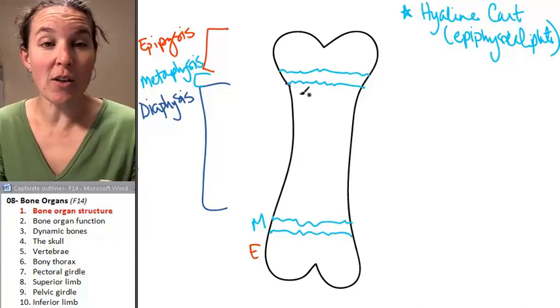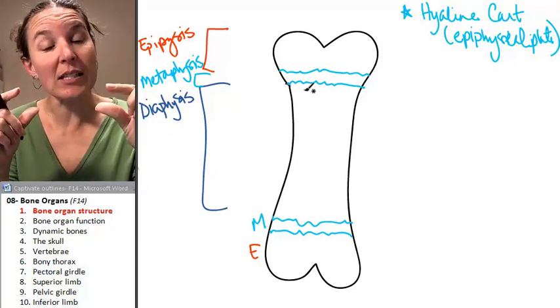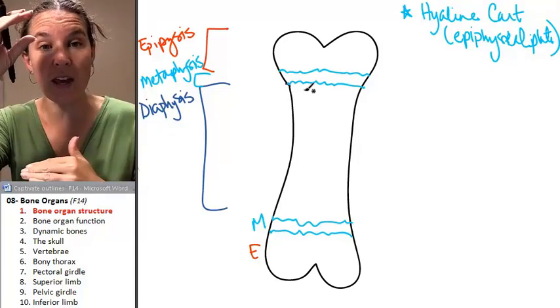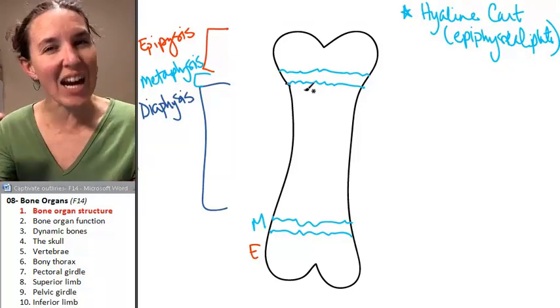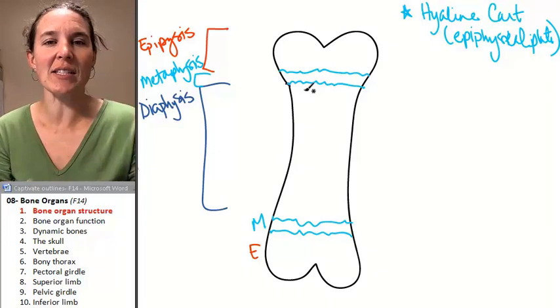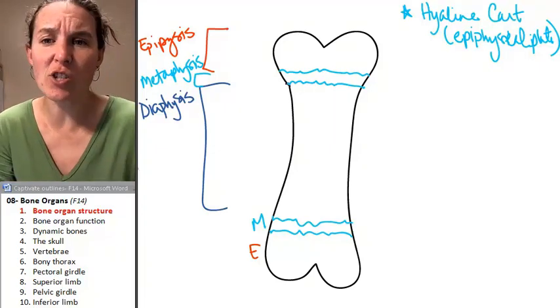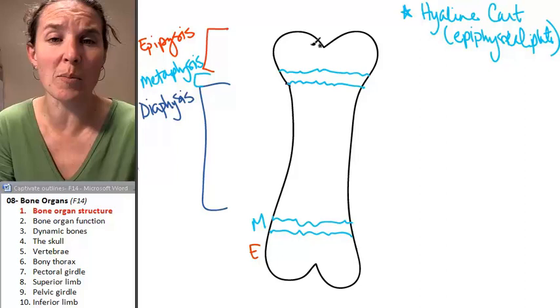So the epiphysis, those are both the ends. The metaphysis contains the epiphyseal plate, but that's an area, and the diaphysis is the shaft. These are just other names for the parts of the long bone.